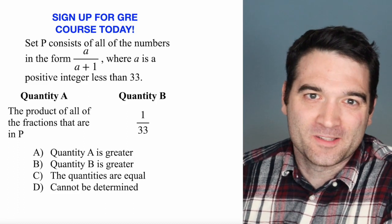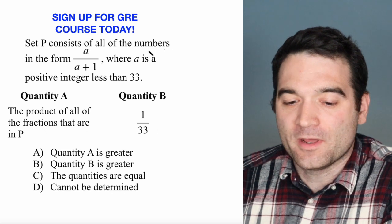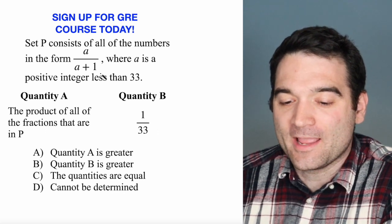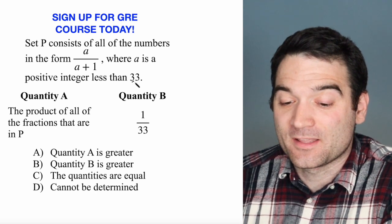Here's a GRE algebra question. Let's take a look. Set P consists of all the numbers in the form a over a plus 1, where a is a positive integer less than 33.